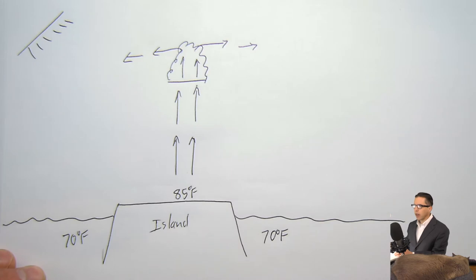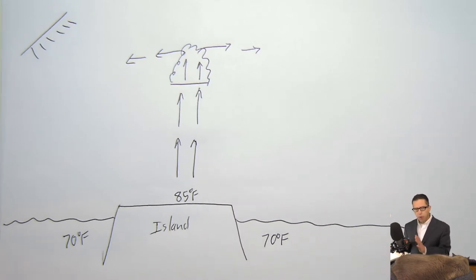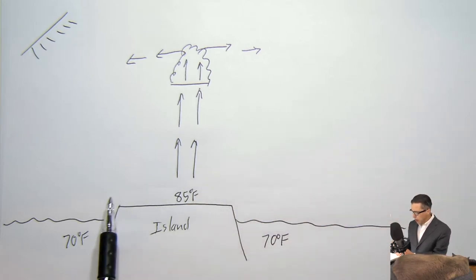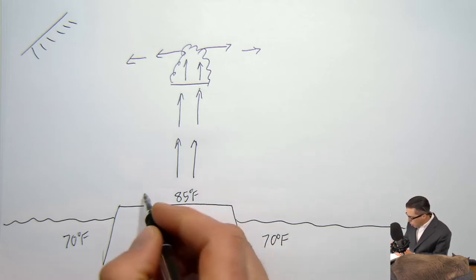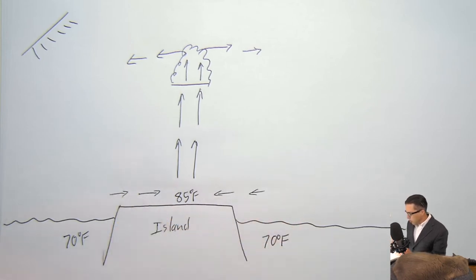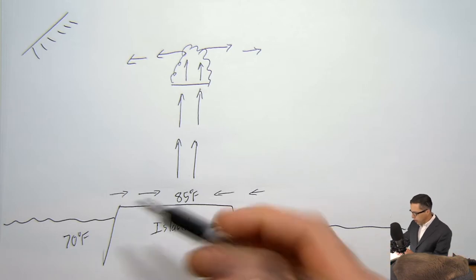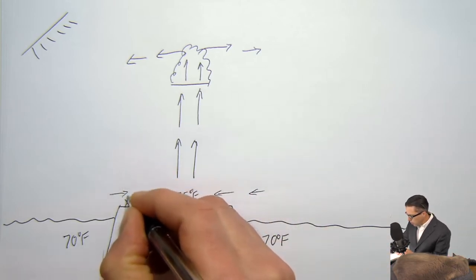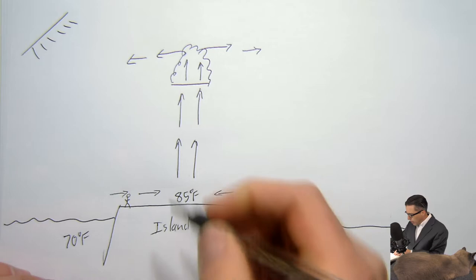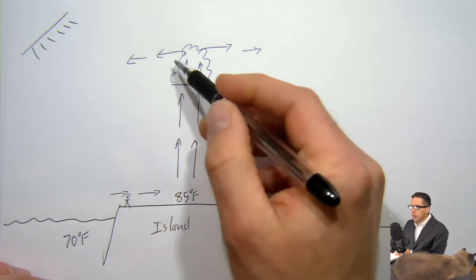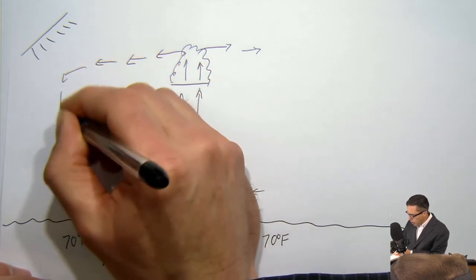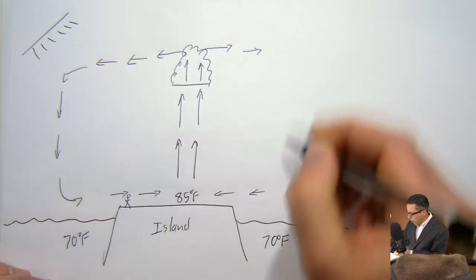The important point is: if you're making air rise off this island, there has to be other air that comes and takes its place. So there has to be air moving in off the ocean to replace the air that's rising off the island. If you're standing on the island, you would feel the sea breeze — wind coming in off the ocean. The wind comes in off the ocean, rises, exits the cloud, and we'd have some kind of convection cell.